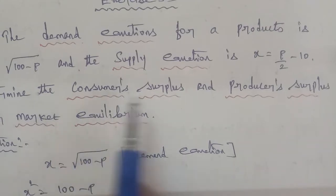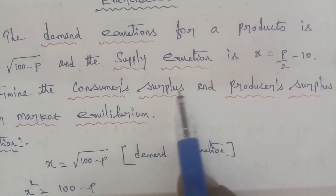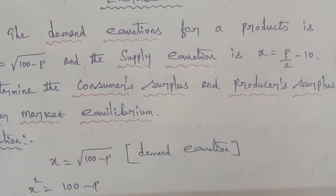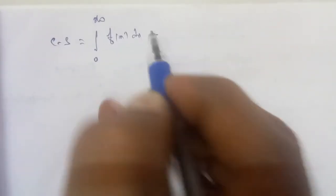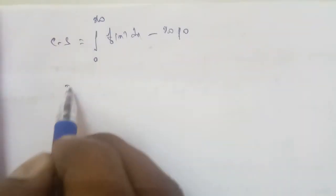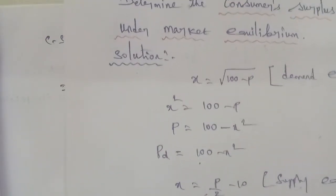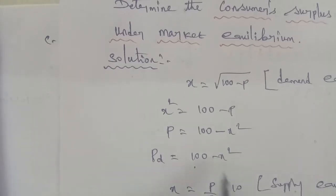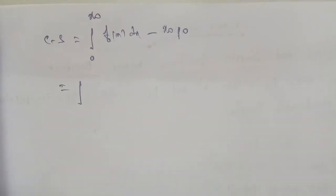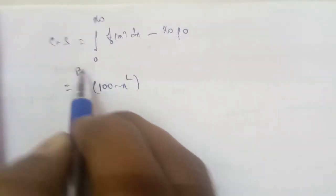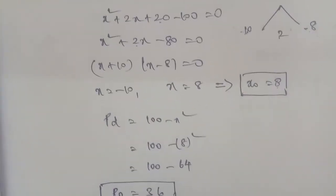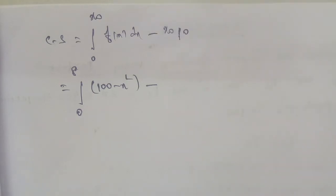Next, determine the consumer surplus and producer surplus. The consumer surplus formula is: CS equals integral from 0 to x0 of f(x) dx minus x0 into p0. Substituting x0 equals 8 and the demand equation Pd equals 100 minus X squared, we apply the formula: CS equals integral from 0 to 8 of (100 minus X squared) dx minus 288.